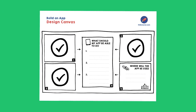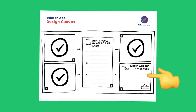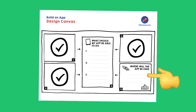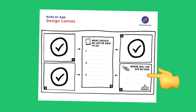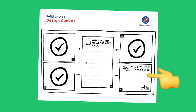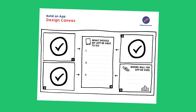Box four — where will your app be used? If the app is for you, maybe it's at home or in school. If it's for someone else, maybe it's outside, at work, in the library, or maybe everywhere.